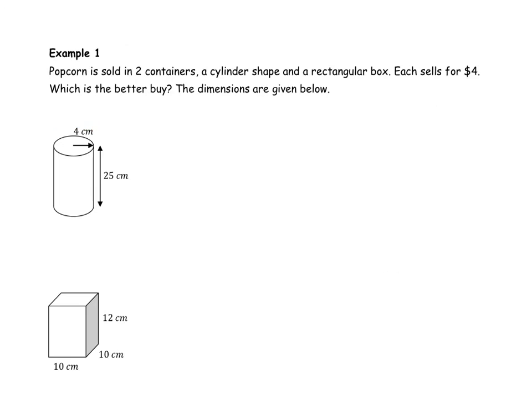Let's get our first example here. We're going to deal with some popcorn. Popcorn is sold in two different size containers - a cylinder and a rectangular box. Each one sells for the same amount, so cost is not a factor here. Which one is the better buy? First, I want you to be thinking about, is this a volume question or is this a surface area question? Your answer should be that it's a volume question because we want to know which one holds more popcorn. Obviously, if they're the same price, we want the one that holds the most popcorn. We simply need to find the volume of each of these shapes.